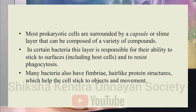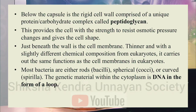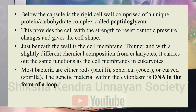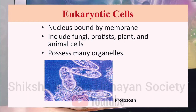The cell wall of bacteria is made up of a carbohydrate-protein complex called peptidoglycan. This layer provides strength to resist osmotic pressure changes and gives shape to the organism. Just beneath the cell wall is a cell membrane, which is thinner and slightly different in chemical composition from eukaryotic cells, but carries out the same function. In bacteria, the DNA is found in the form of a loop in the cytoplasm.